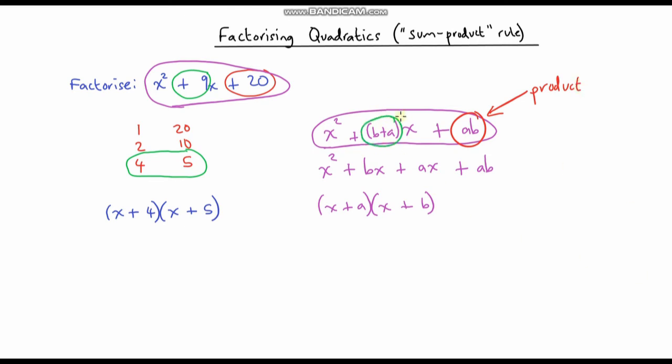And then a plus b or b plus a - doesn't matter which way around we put it - that is the sum of our two numbers, and that's where it comes from. So you can see that this 9 is a plus b and this 20 is a times b. We need to work out which two numbers a and b, when we multiply them together we get 20, and when we add them together we get 9. That's where it comes from and that's how we established that the two numbers were 4 and 5, because 4 times 5 is 20 and 4 plus 5 gives us 9.